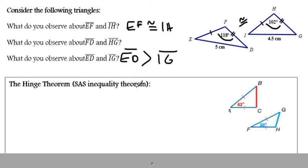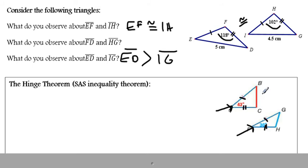The hinge theorem says that if you have two sides congruent in two different triangles and the included angle measure is given, then you can determine the length of the opposite side by the measure of the included angle.